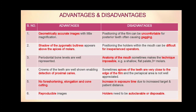The advantages of the paralleling technique are that it produces geometrically accurate images with little magnification. The shadow of the zygomatic buttress appears above the apices of the molars. Crowns of teeth are well depicted, making it good for detection of proximal caries. There is no foreshortening, elongation, or cone cutting, and reproducible images are produced. Disadvantages include positioning of films which can sometimes be uncomfortable for posterior teeth, causing gagging. Positioning of holders within the mouth can be difficult for inexperienced operators. The anatomy of the mouth sometimes makes this technique impossible, for example in cases of shallow or flat palate or in the case of third molars. Sometimes surfaces of the teeth are very close to the edge of the film and the periapical area is not well depicted. There is increased exposure time due to increased target-to-patient distance, and the holders need to be autoclaved and disposed of after use.